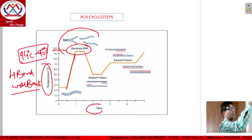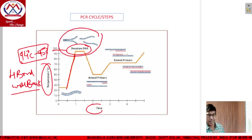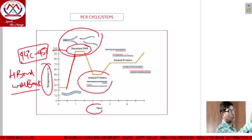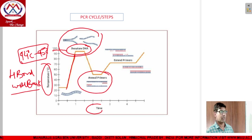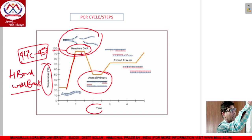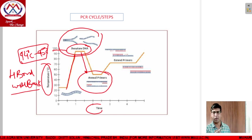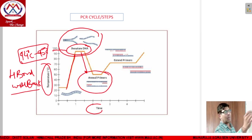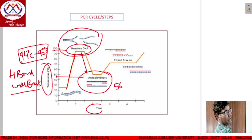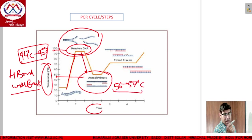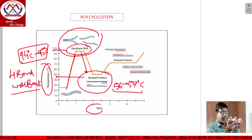That first step in PCR is called denaturation. The second step is annealing — the binding of the primer to a particular complementary segment of the DNA. The temperature decreases below 94 to 95 degrees centigrade. The normal range of annealing temperature is 56 to 57 degrees centigrade. At that temperature the primer binds with the particular complementary segment, and denaturation and re-naturation both appear at this stage.